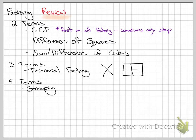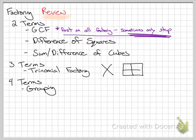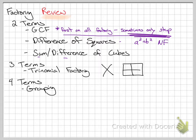We are going to be dealing with two terms, three terms, or four terms this year. When it has two terms, there are a couple of options. GCF is always the first step, but sometimes it's the only step, especially if it's a two-term factoring problem. Sometimes in a three-term problem GCF is all you can do. Then it might be difference of squares, or sum or difference of cubes. Note: squares does not have a sum option — there is no sum of squares factoring. If it has three terms, you do trinomial factoring. If it has four terms, you do grouping.